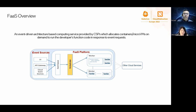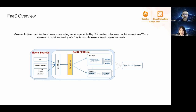Before diving into our snapshot-based way of starting a function instance, I would like to first set up the context for the discussion. So what is FaaS? FaaS is an event-driven architecture based computing service which allocates micro VMs or containers on demand to run the developer's function code in response to event requests. FaaS provides three key features: automatic on-demand instantiation of function instances upon a trigger event, on-demand auto-scaling out and in with no need for the user to plan for peak traffic, and utility-based billing where the user never pays for idle time.